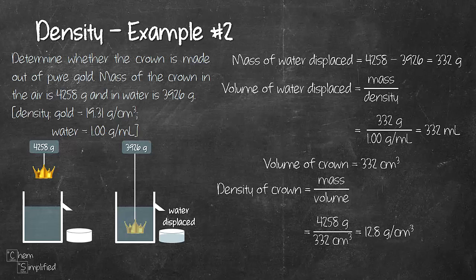Now compare the density of the crown that we just calculated with the density of gold. Gold is 19.31. What do you think, is the crown made out of pure gold? Sadly no. So looks like the crown is not made out of pure gold.